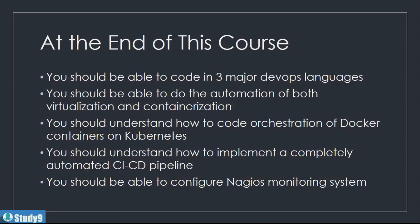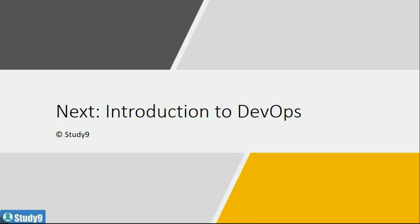You should understand how to put orchestration of Docker containers on Kubernetes — that is, how to ensure that a Docker container is running on a server, and if that server goes down, how to bring up that Docker container on another server. You should also understand how to implement a completely automated CI/CD pipeline end-to-end. We will also learn Nagios, so you should be able to configure a Nagios monitoring system using Nagios configuration coding language. In the next topic, we are going to introduce you to the core concepts of DevOps. Thank you.